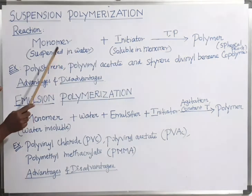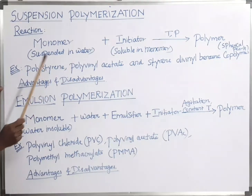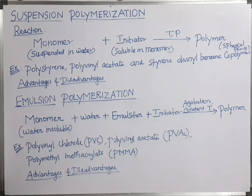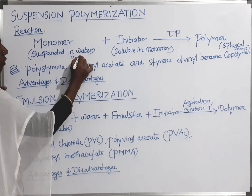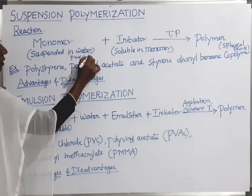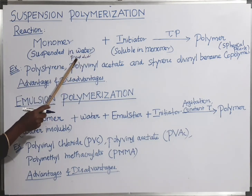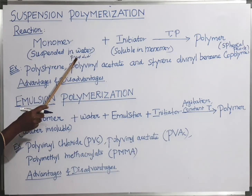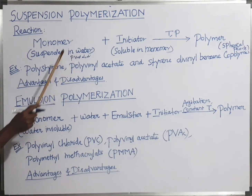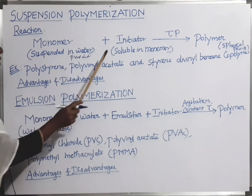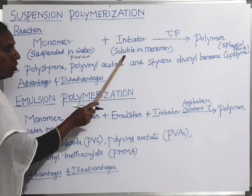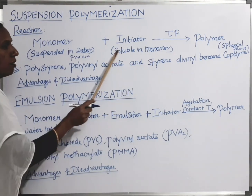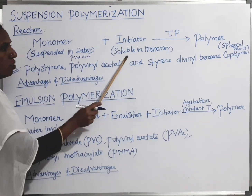To separate the monomer droplets from each other, a water-soluble polymer — polyvinyl alcohol — is added. Then in the next step, the initiator is added. The initiator is soluble in the monomer droplets.